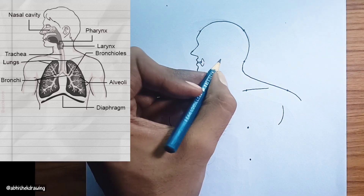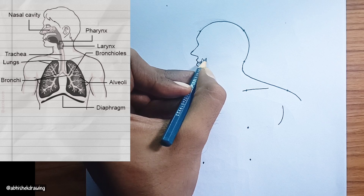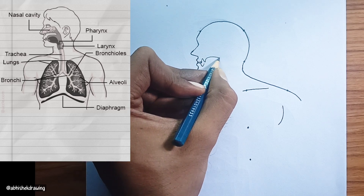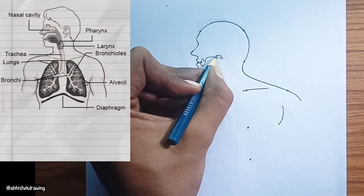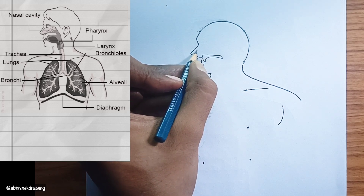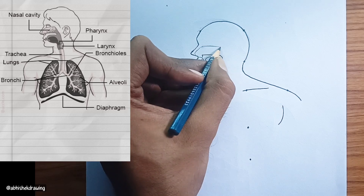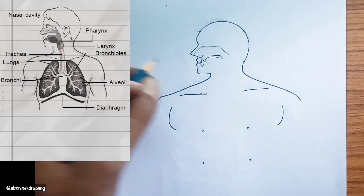Bronchioles. These are tiny, fine branches that extend from the bronchi within the lungs. They are even smaller in diameter than the bronchi and lead directly to the alveoli.